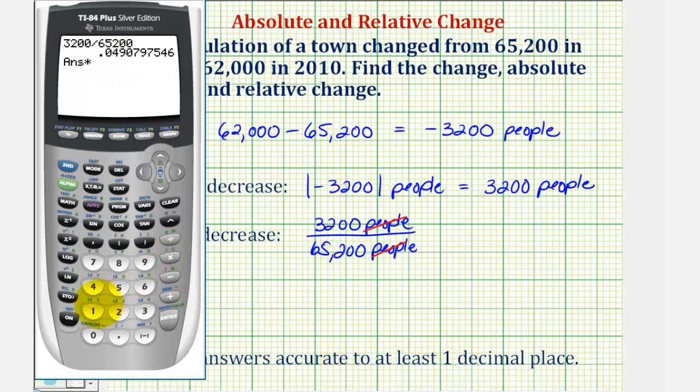So let's multiply by 100, which is the same as moving the decimal point to the right two places. So we'll say the relative decrease is approximately 4.9 percent.